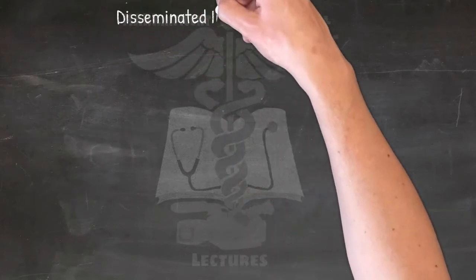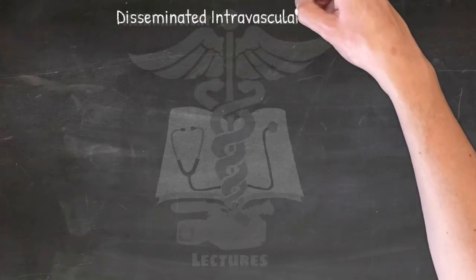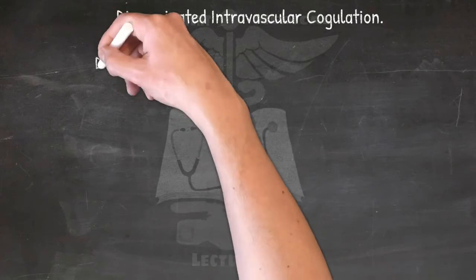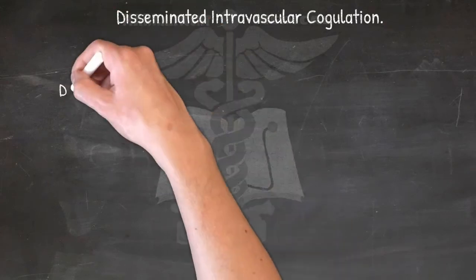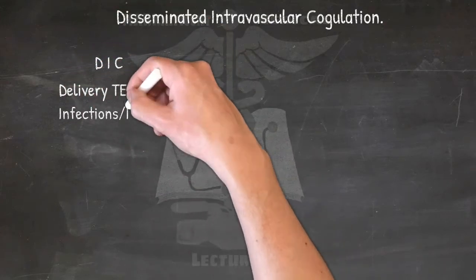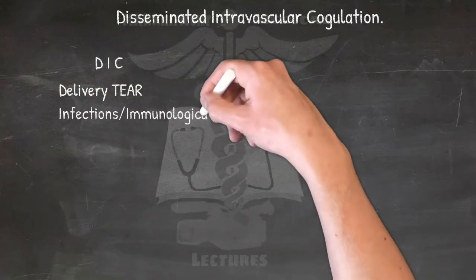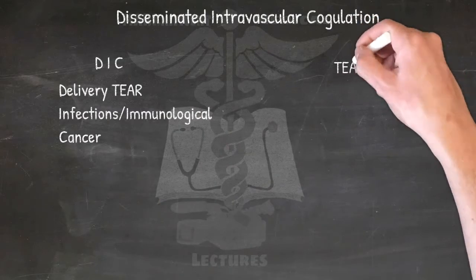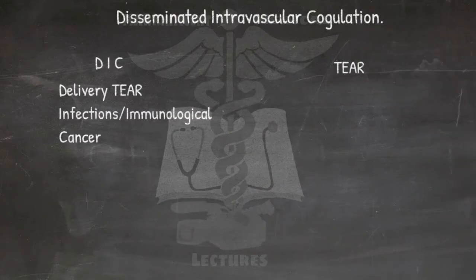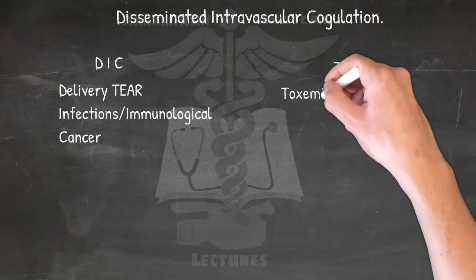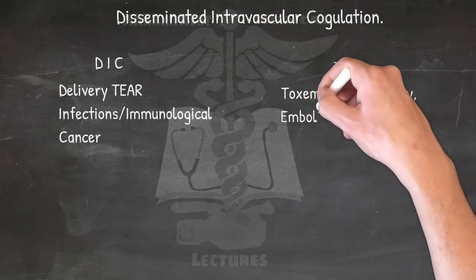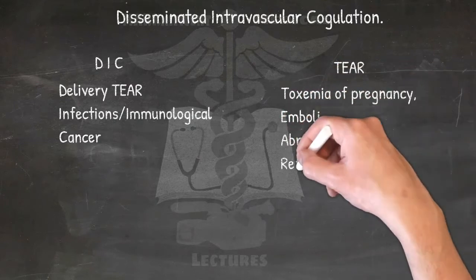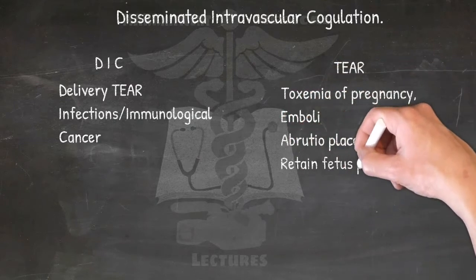Disseminated intravascular coagulation — the causes: DELIVERY TEAR INFECTIONS. Gram-negative obstetrical complications are TEAR — Toxemia of pregnancy, Emboli amniotic, Abruptio placentae, and Retained fetus products.